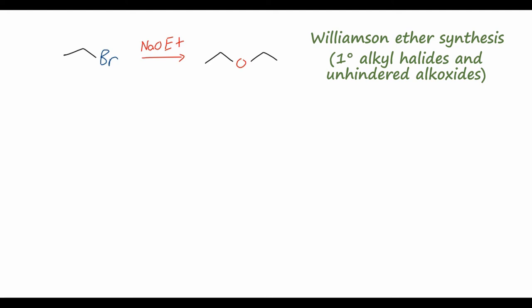We can also synthesize cyclic ethers using the Williamson ether synthesis. If we have a molecule with an OH and a halide in the same molecule, we can use an intramolecular Williamson ether synthesis to synthesize a cyclic ether. In this case, we have a stereocenter where the bromine is coming out of the page toward us, which we can designate as an R stereocenter. Treating this with sodium hydroxide — what compound will this make? Let's figure it out.